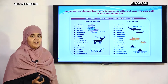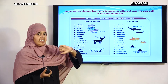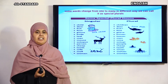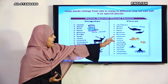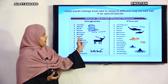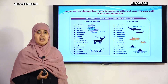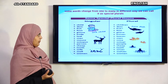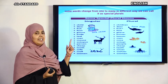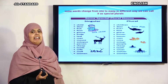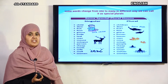Knife — knives. Knife (chaku) has a silent 'K'. The 'f' sound changes to 'v' in the plural. So knife becomes knives — K, N, I, V, E, S. Leaf — leaves. Leaf (patta) becomes leaves (patte). In singular we have 'f'; in plural the 'f' changes to 'v' — leaf becomes L, E, A, V, E, S — leaves.